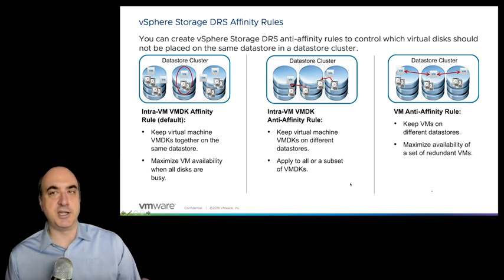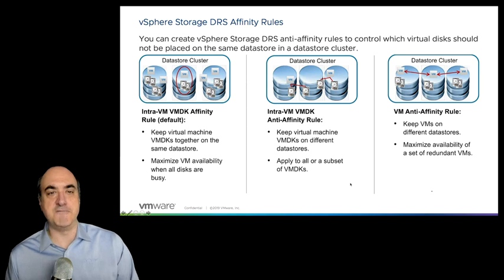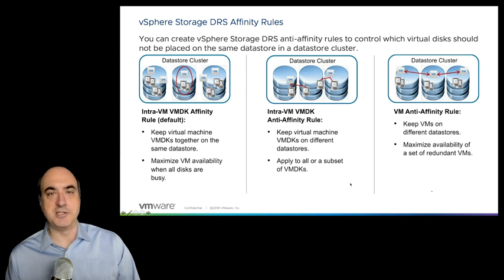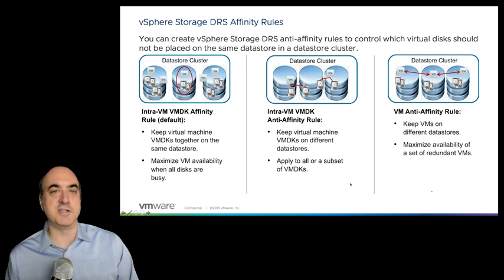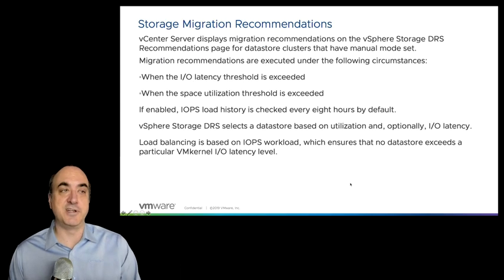You can create an intra-VM VMDK anti-affinity rule to separate a VM's boot drive and data drive onto different data stores. You can also create inter-VM anti-affinity rules — for example, ensuring two replica VMs are always on different data stores. You don't need to specify which data stores, just that they must be different ones.